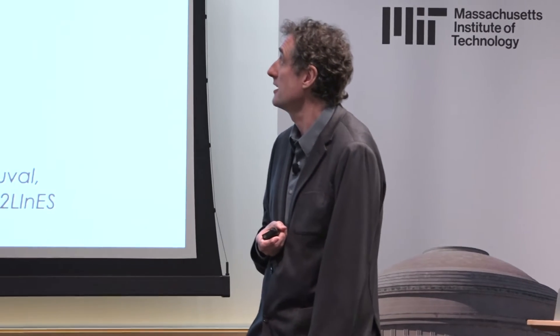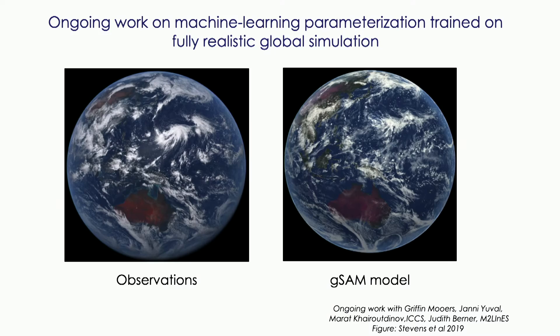Our group and collaborators are working on extending this to a fully realistic simulation. I'm showing a cloud scene from observations and then the kind of model we're learning from, called GSAM, which is pretty similar. It still will have some defects — it's a simulation, and there's too much Cirrus, for instance. This is ongoing work to basically get something we can use operationally.